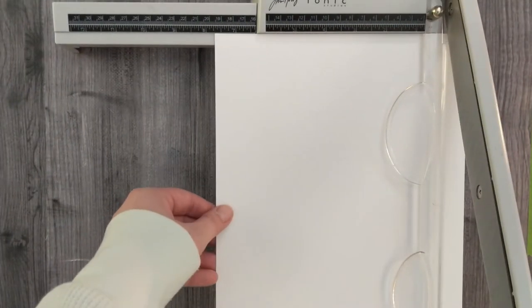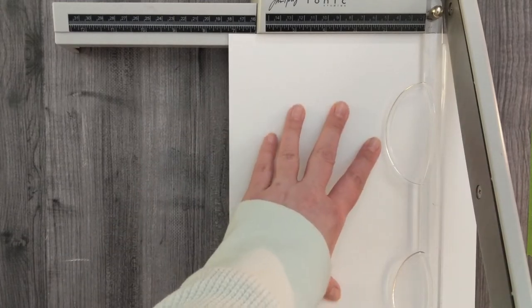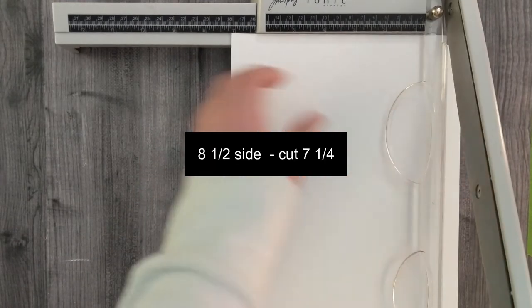Starting with an 8 1/2 by 11 sheet of cardstock, you'll cut the 8 1/2 inch side at 7 1/4.